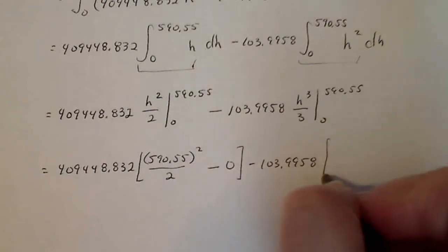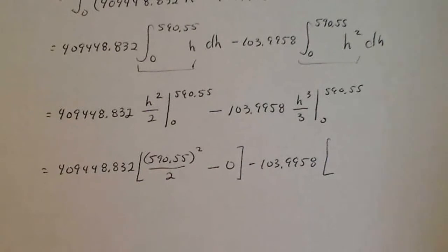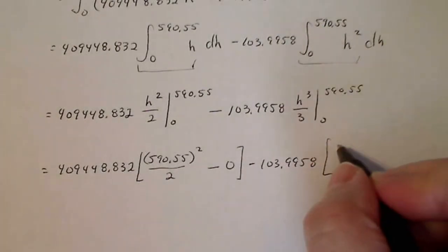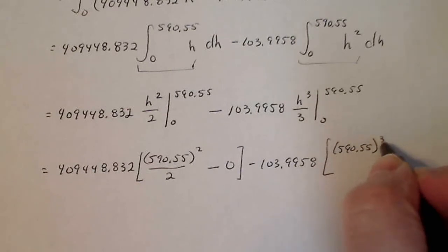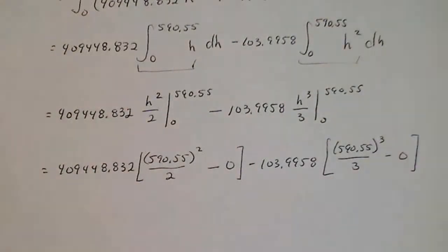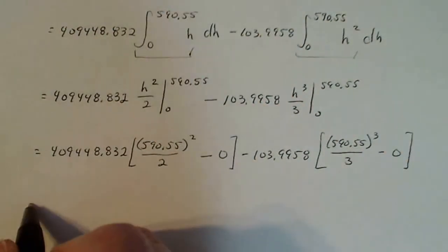Do the same thing over here. Plug in 590.55 in here. Cubed over three and I plug in zero minus zero. Looks good so far. I keep going.